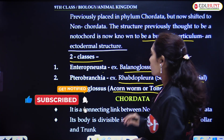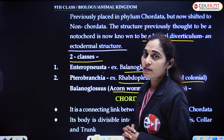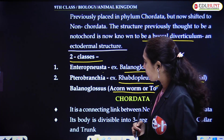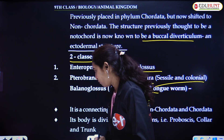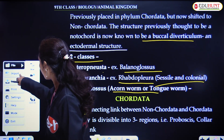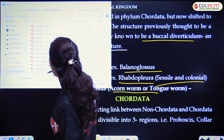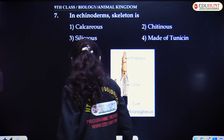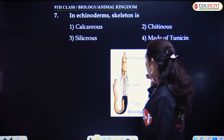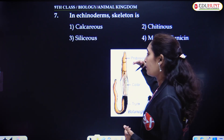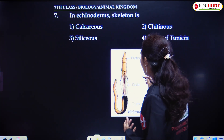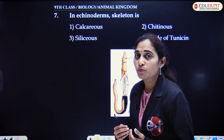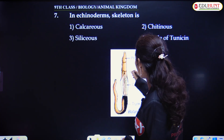Balanoglossus is the form present in the Enteropneusta class, and it is commonly called a corn worm or tongue worm. Looking at the image of Balanoglossus, the entire body can be differentiated into three different parts: the proboscis is the anterior part, the middle part is known as the collar, and the posterior part is called the trunk.